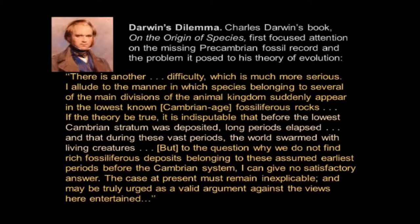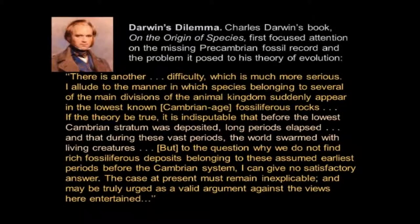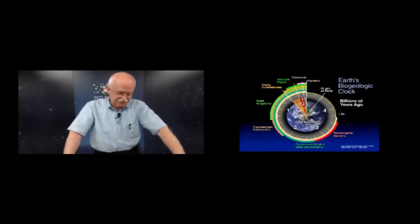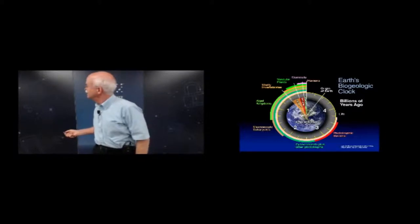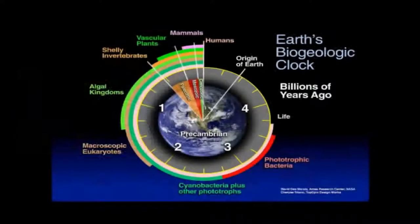To the question of why we cannot find deposits belonging to these assumed earliest periods, Darwin said 'I can give no answer,' viewing this as a critical, valid argument against his views. That was mid-19th century. The amazing thing is how much longer it really took before we made progress on that. This is a textbook representation of Earth's history as a clock, with the origin of the Earth at about 4.54 billion years going clockwise to the present, underscoring that very narrow slice of history where plants and animals began and proliferated. There's this vast period where we don't have much evidence of macrofauna or flora — this is the age of the microbial biosphere.